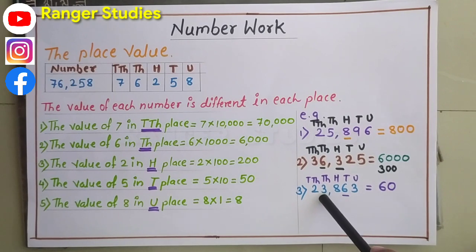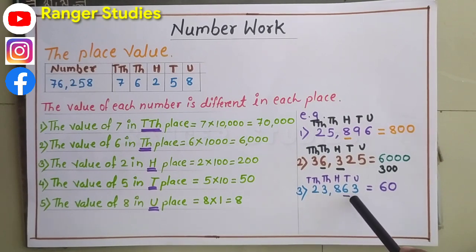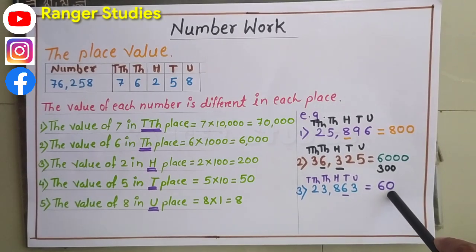Next, 23,863. Here the underlined digit is 6. So the value of 6 is 6 multiplied by 10, which equals 60.